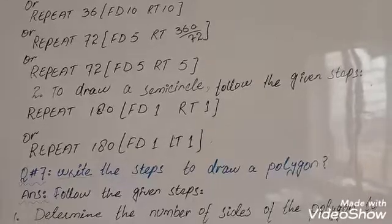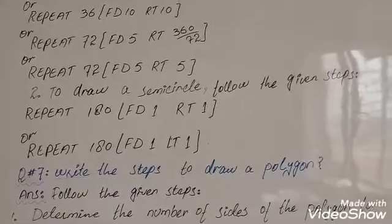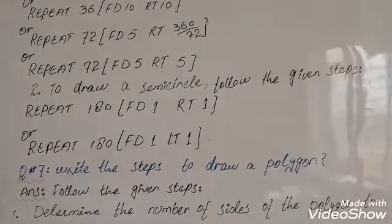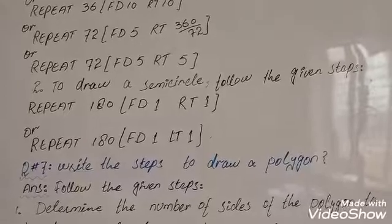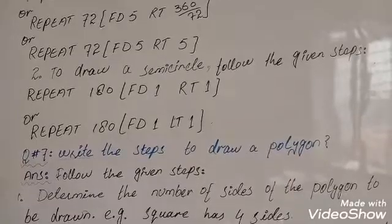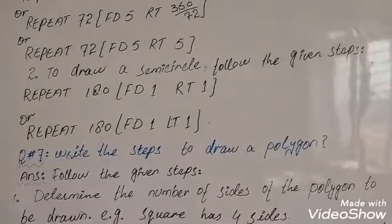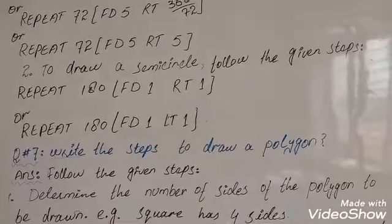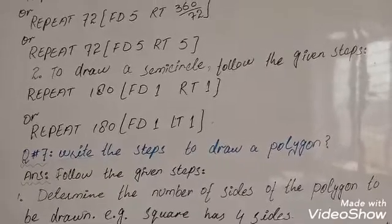To draw a semicircle, follow the given steps. REPEAT 180, length 1, and angle 1. REPEAT 180 FD 1 LT 1.